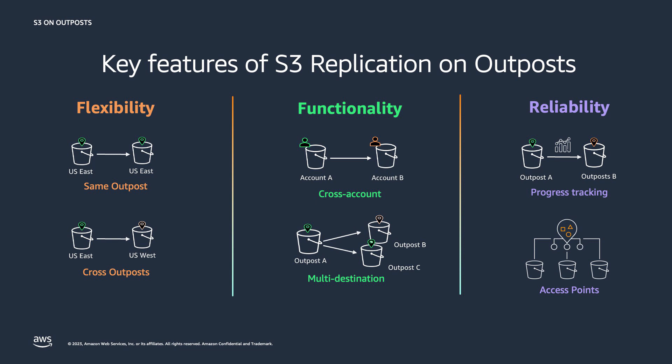Amazon S3 access points on Outposts simplify data access for any AWS service or customer application that stores data in S3. Access points are named network endpoints that are attached to buckets that you can use to perform S3 on Outposts object operations. Each access point has distinct permissions and network controls that S3 on Outposts applies for any request made through that access point.